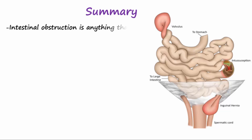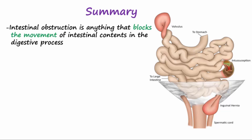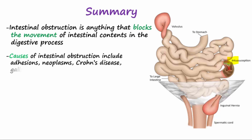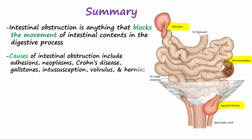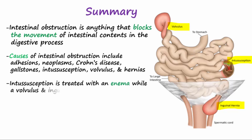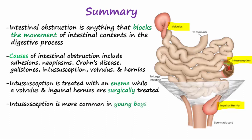In summary, intestinal obstruction is anything that blocks the movement of intestinal contents in the digestive process. Causes of obstruction include adhesions, neoplasms, Crohn's disease, gallstones, intussusception, volvulus, and hernias. Intussusception is treated with an enema, while volvulus and inguinal hernias are surgically treated. Intussusception is more common in young boys, while inguinal hernias and volvulus are more common in adult men.